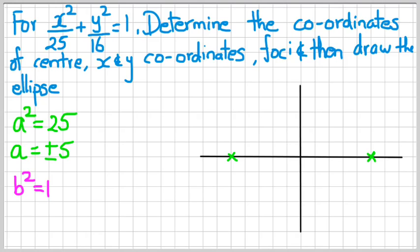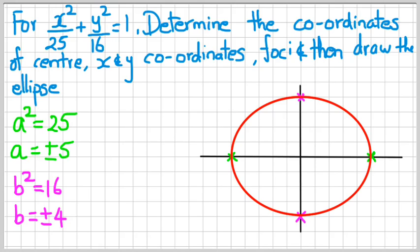The next thing is b² is equal to 16, which means b is equal to plus or minus 4. Now we can draw the b values and you have a sort of an outline of the ellipse — there it is. Now what do we need next? Foci. To figure out the foci, we know that c² is equal to a² minus b².